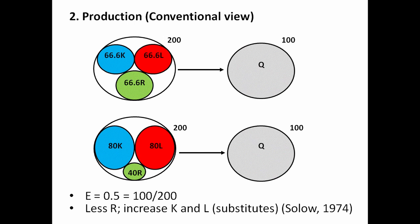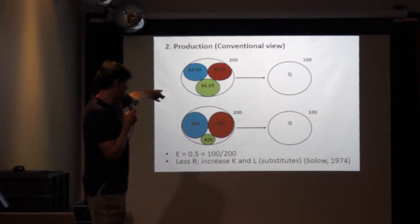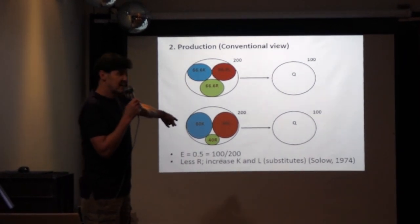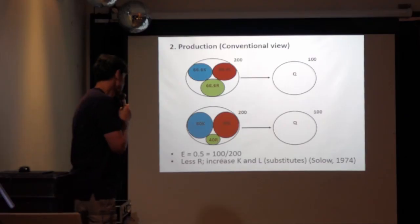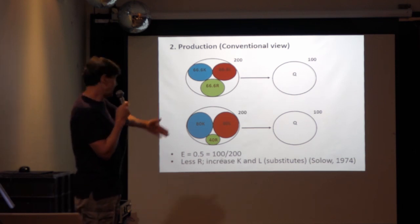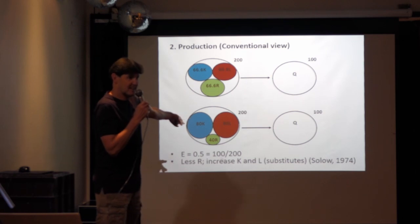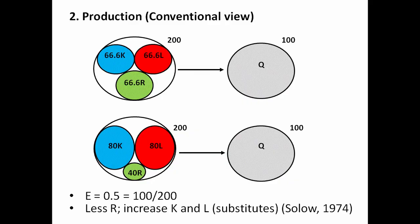Another conventional view is that if one category of inputs — say natural resources — falls from 66.6 to 40, it doesn't matter: just increase capital and labour to 80 each. You'd still have 200 units of inputs to produce 100 units of output. So less R, just increase K and L. Of course, what a lot of people forget is that K and L don't fall from the sky — K has to be produced and has to be produced with the use of resources. It's assumed the three categories are perfect substitutes, but of course they're very unique.